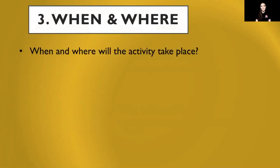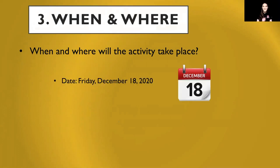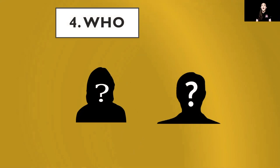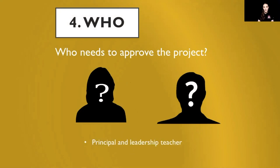W number three focuses on 'when and where' — when and where will this activity take place? For this example, Friday December 18th, 2020 is when this assembly takes place, with our time set to 1:30 PM. Our fourth W is 'who' — who needs to approve this project? This may be the principal or even your leadership teacher. It's important that you ask an adult on your campus to know who you need to ask for approval for your projects.